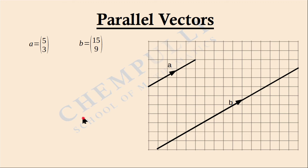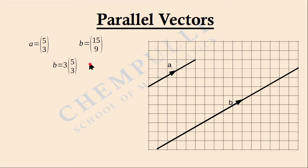Now check this part. Vector B is equal to (15, 9). In 15 and 9, which number is common? 3 is common — that is 3 times 5 is 15, and 3 times 3 is 9. So we can take 3 outside and write vector B equal to 3 times (5, 3).